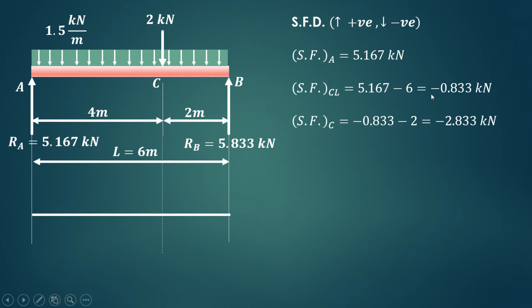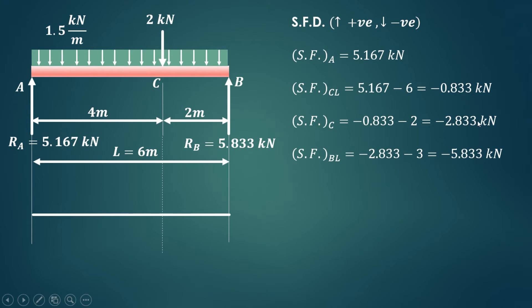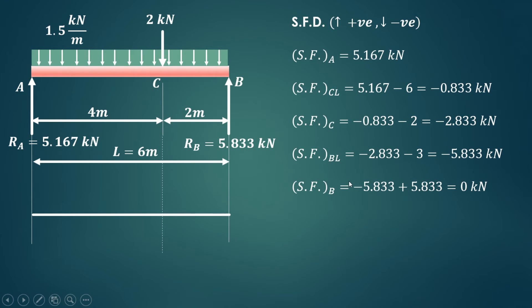The shear force exactly at point C includes the 2 kN downward point load added to −0.833, giving −2.833 kN. For shear force just left of B, the UDL between C and B contributes 1.5 × 2 = 3 kN added to −2.833, giving −5.833 kN. Exactly at B, the upward reaction RB = +5.833 kN is added, giving 0 kN — which confirms our calculations are correct.